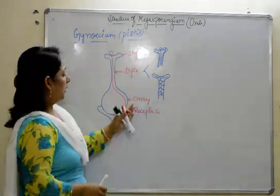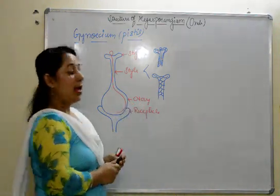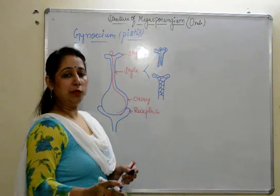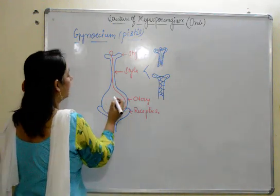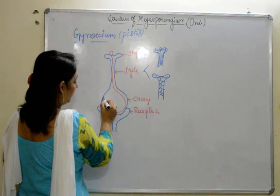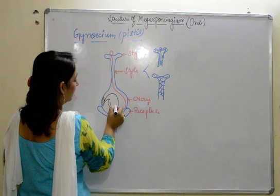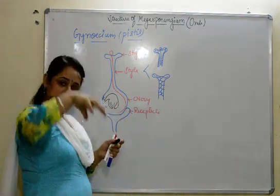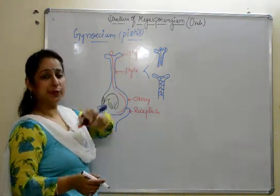Next is the ovary. Ovary contains the ovule. Ovaries can have a single ovule or multiple ovules. The most common ovule found in plants is anotropous ovule, which we will be discussing here in this video. With the help of the placenta, the ovary wall has this placenta and with this placenta the ovule is present in the ovary. This is an anotropous ovule which faces downwards.